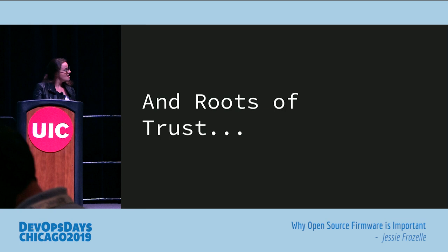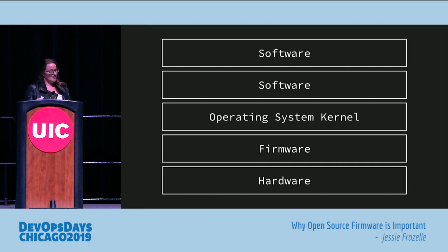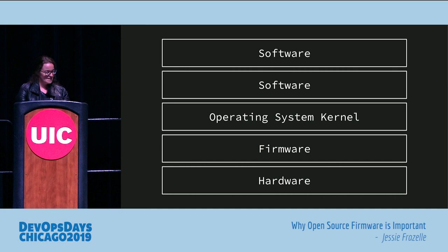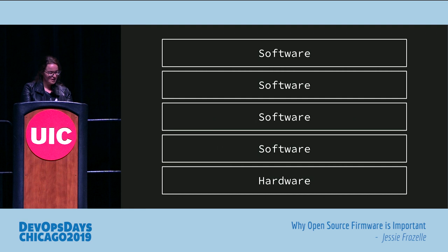If you think about the layers of software today, it's kind of like you have a bunch of software on top — like your app, then maybe something that controls the app, then you have your operating system kernel, then firmware, then hardware. Just to make it super general. And if we make it even more general: everything is shit, because everything has bugs and everything is horrible.